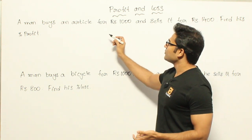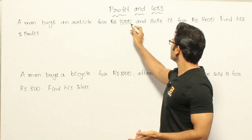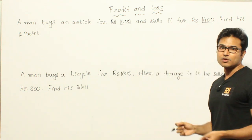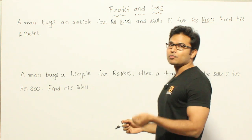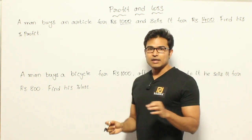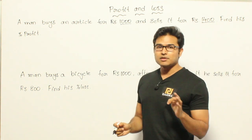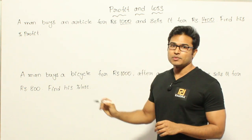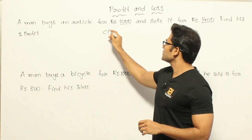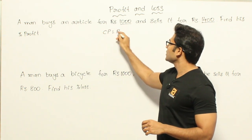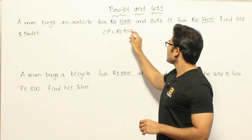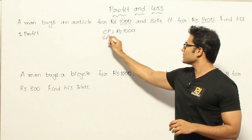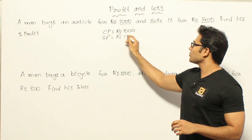He bought it for 1000 rupees and sold it for 1400. Therefore the difference is definitely going to be the profit. Let's understand the terminology here. The man bought the article for 1000 rupees, which means his cost price is 1000, and he sold it for 1400 rupees, which means his selling price is 1400 rupees.